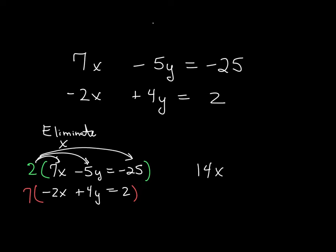I will get 14x minus 10y equals negative 50. And then when I distribute that 7 to every part of the second equation, I am left with negative 14x plus 28y equals 14.